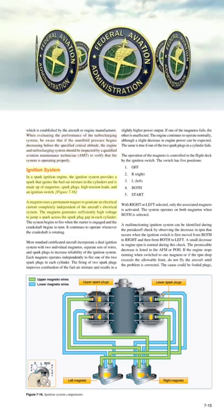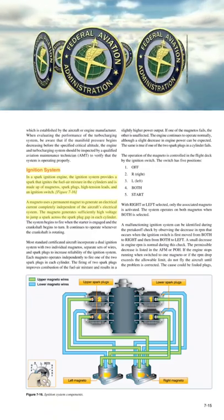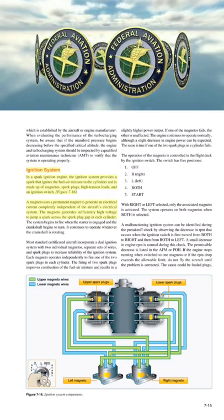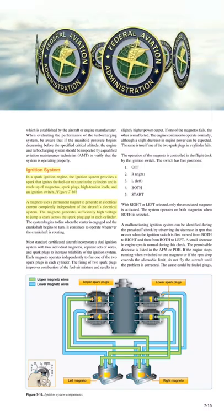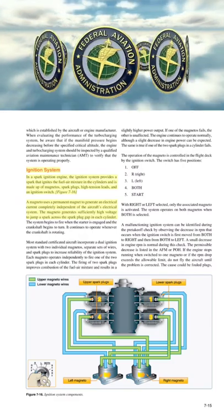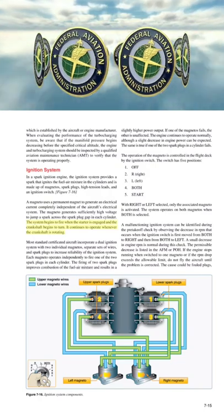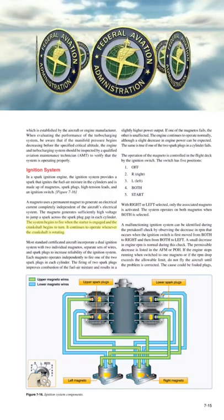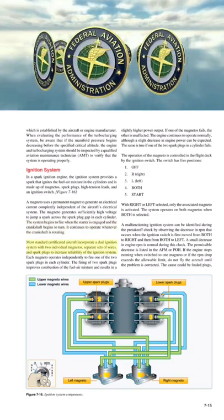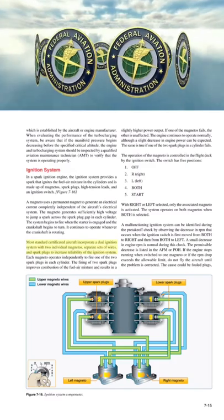In a spark ignition engine, the ignition system provides a spark that ignites the fuel-air mixture in the cylinders and is made up of magnetos, spark plugs, high-tension leads, and an ignition switch. A magneto uses a permanent magnet to generate an electrical current completely independent of the aircraft's electrical system. The magneto generates sufficiently high voltage to jump a spark across the spark plug gap in each cylinder. The system begins to fire when the starter is engaged and continues to operate whenever the crankshaft is rotating. Most standard certificated aircraft incorporate a dual ignition system with two individual magnetos, separate sets of wires, and spark plugs to increase reliability.